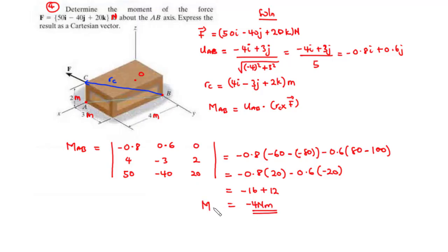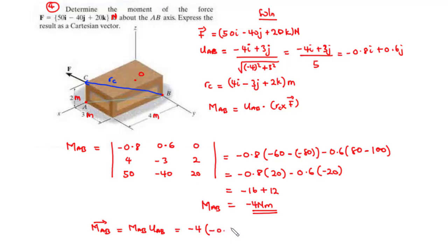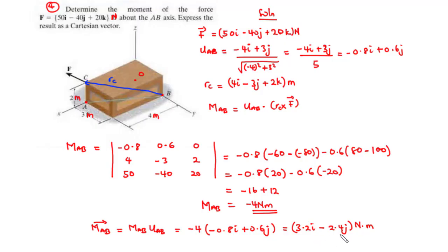This scalar value is the magnitude of M_AB. We are asked to represent the result as a Cartesian vector, so M_AB equals M_AB magnitude times u_AB, which is negative 4 times (negative 0.8i plus 0.6j), giving 3.2i minus 2.4j Newton meters. This is the Cartesian vector representation of the moment about AB. That is it for today's video — thanks for watching and see you in my next video.